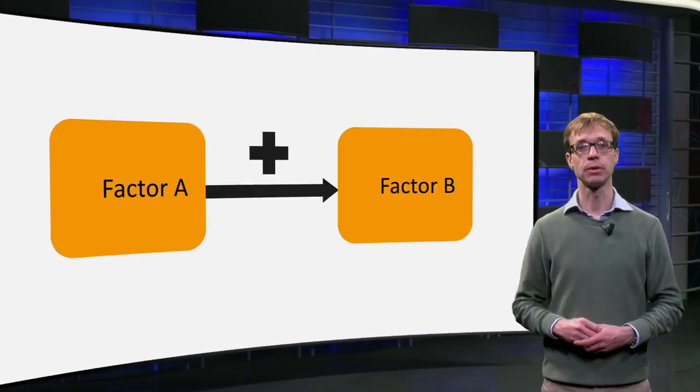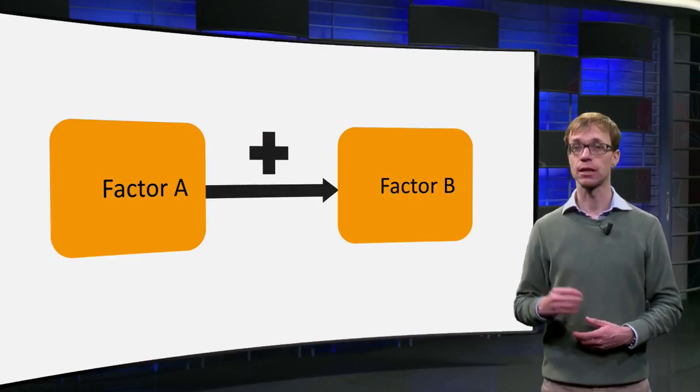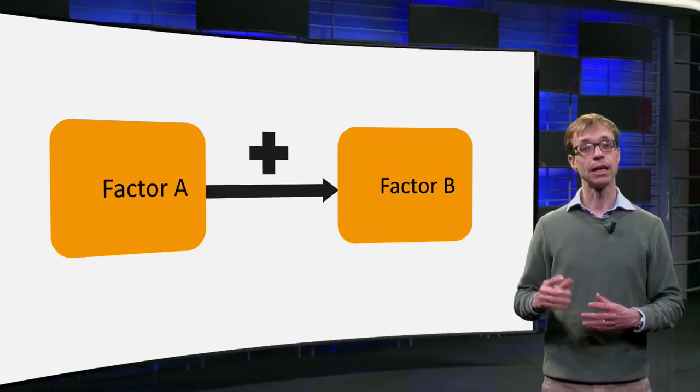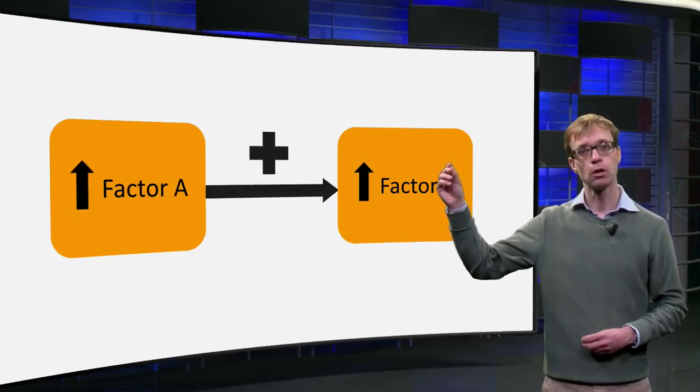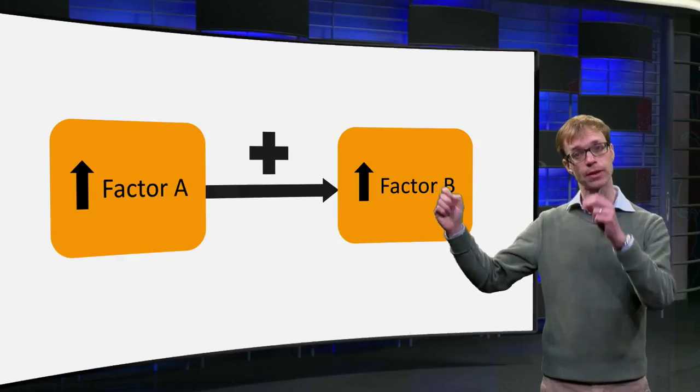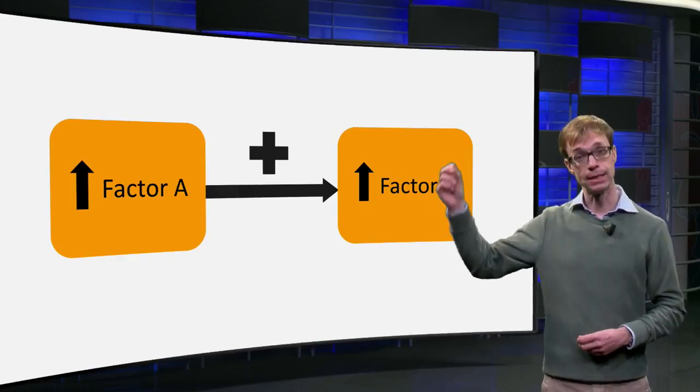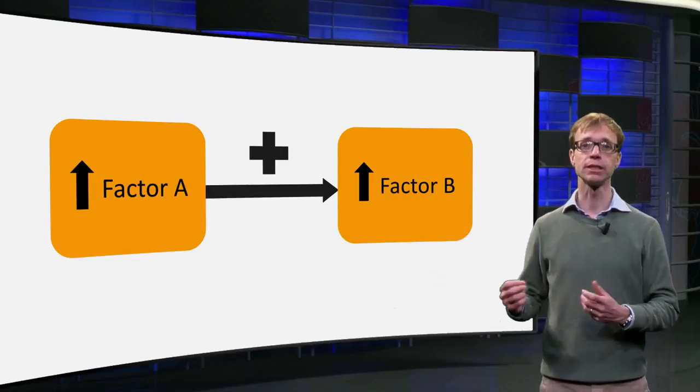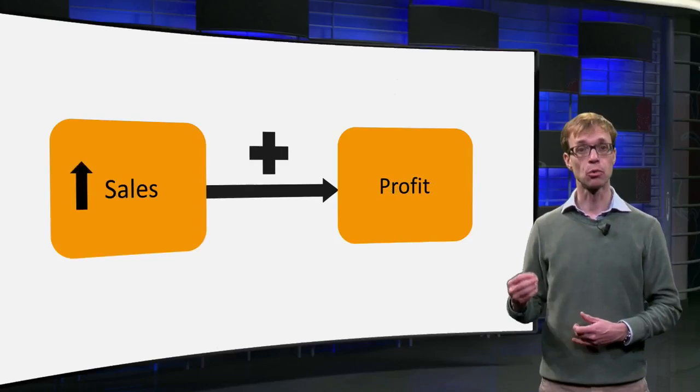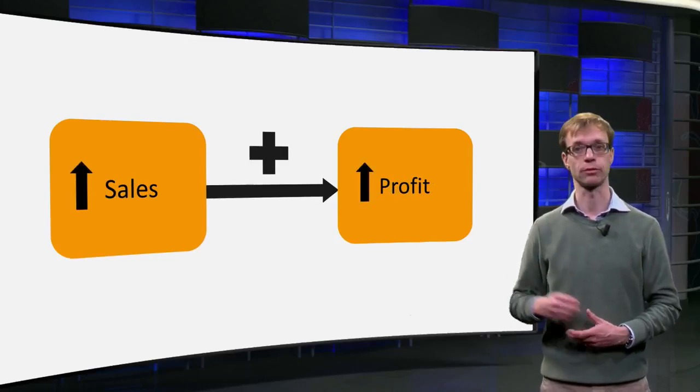A basic cognitive map consists of factors and causal relations. If there is a positive relation, an increase in factor A will lead to an increase in factor B. A decrease in factor A will lead to a decrease in factor B. For instance, for a shop, more sales will mean more profit.